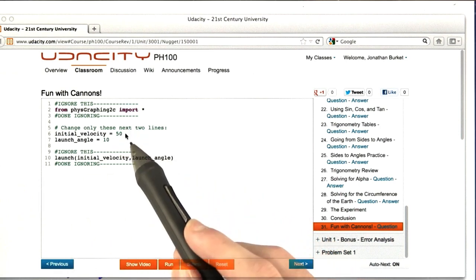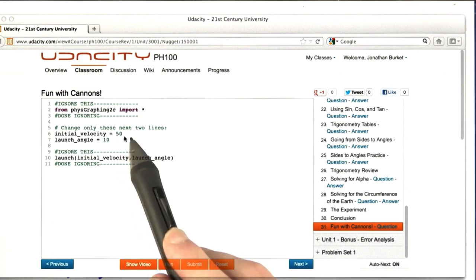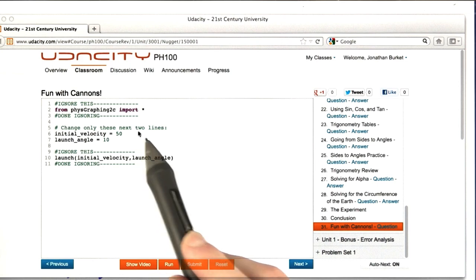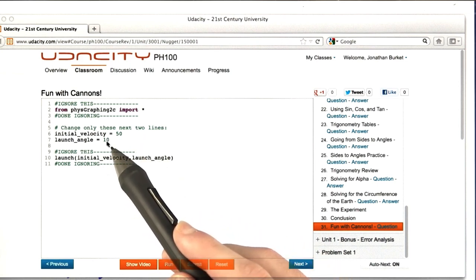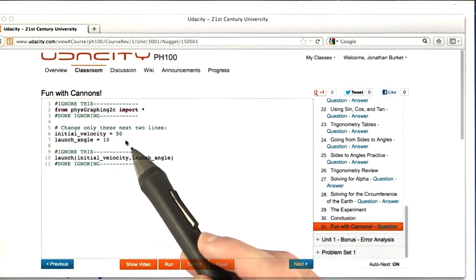You only need to look at these two. You're going to take this line, initial velocity equals 50, and replace the 50 with what you want your initial velocity to be. If you wanted your initial velocity to be 60 meters per second, then you would replace the 50 with a 60. You don't need to include the units. If you wanted the launch angle to be 20 degrees, then you would replace this 10 with 20. Again, you don't need to write the word degrees or anything like that.